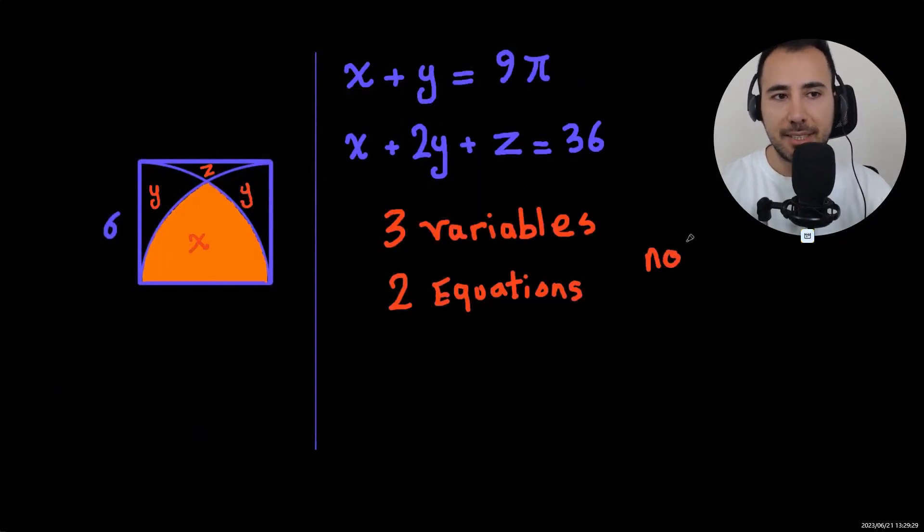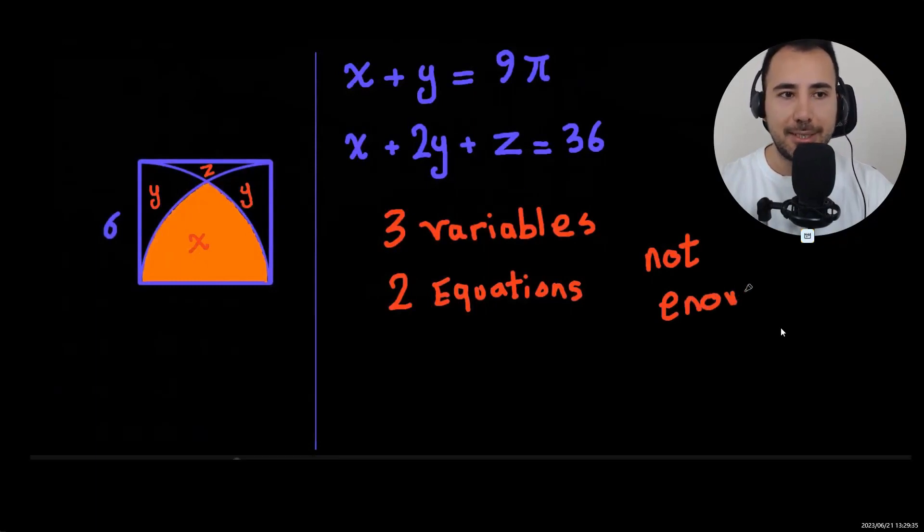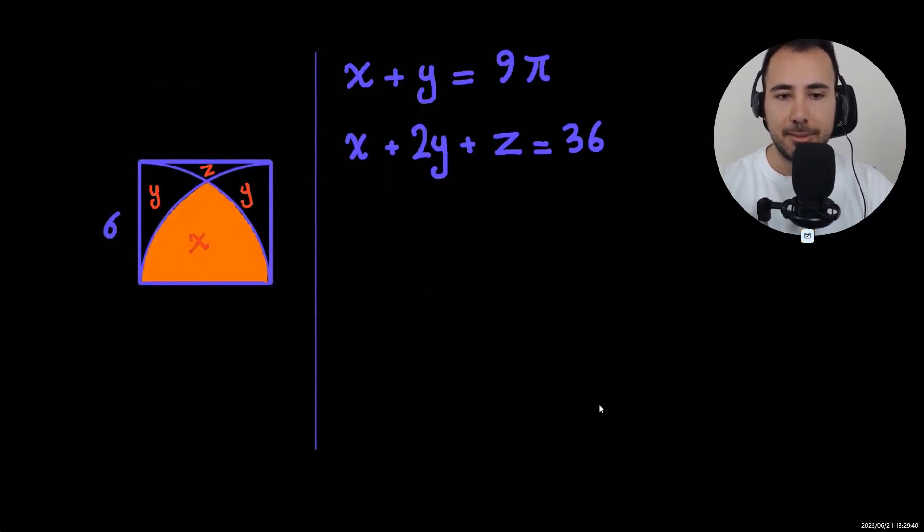So we need to think of something else. That's not enough. We need to look at the picture to find something else too. What if we draw this line? This line, as you see, is again the radius of this circle. So this one is also 6, this one is also 6, this one is also 6.